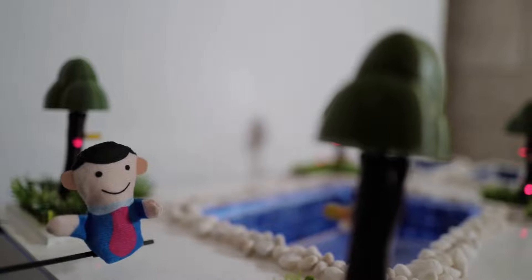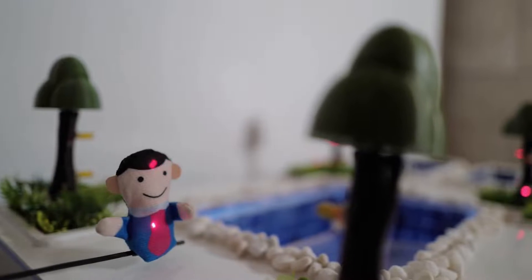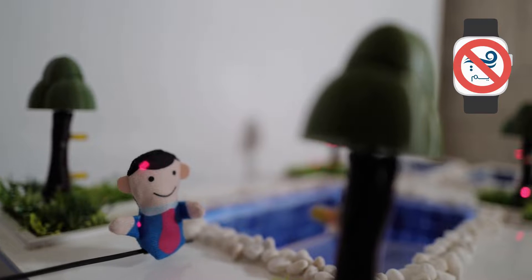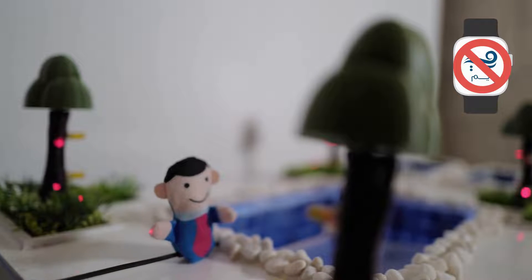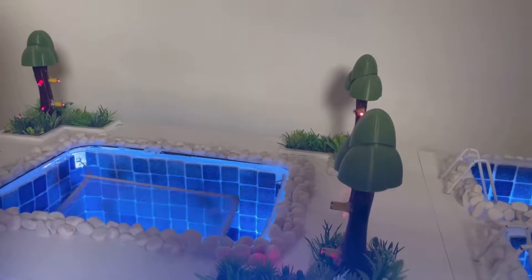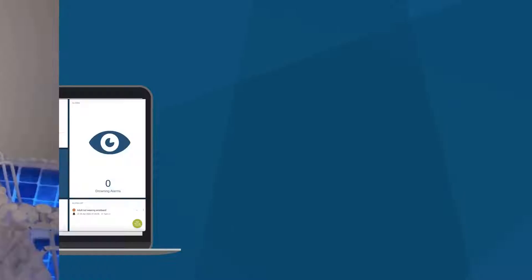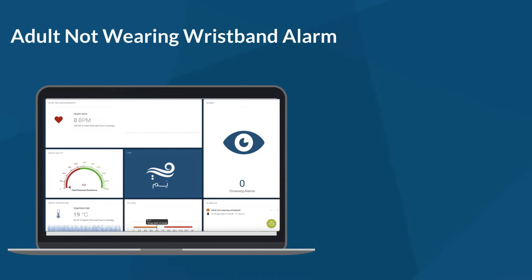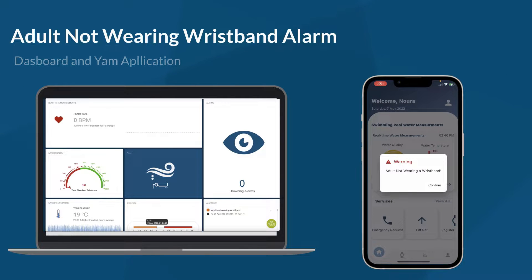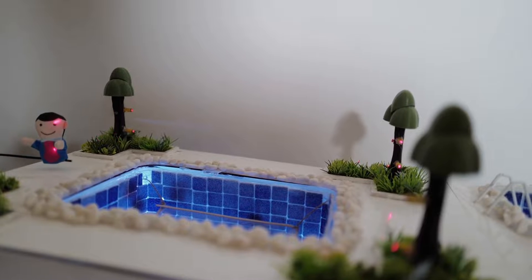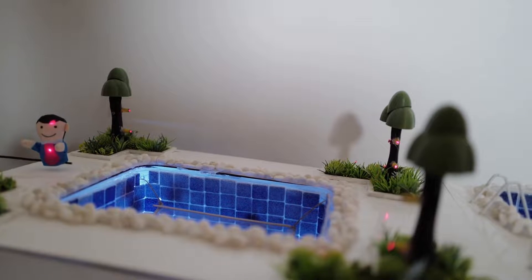If the system detects a swimmer's presence around the pool and the swimmer was not wearing the wristband, YAM will raise the net from under the pool instantly, thereby prohibiting the swimmer from getting into the pool. As a result, seniors can feel safe.